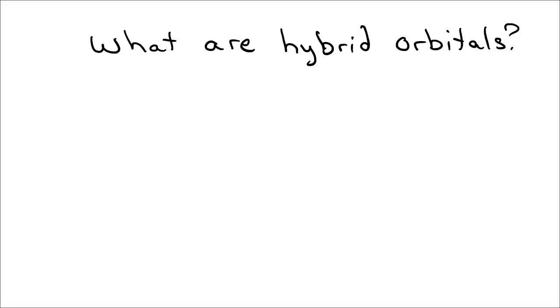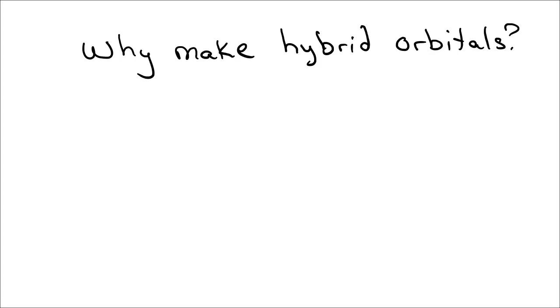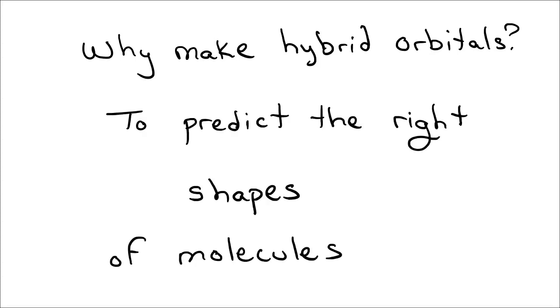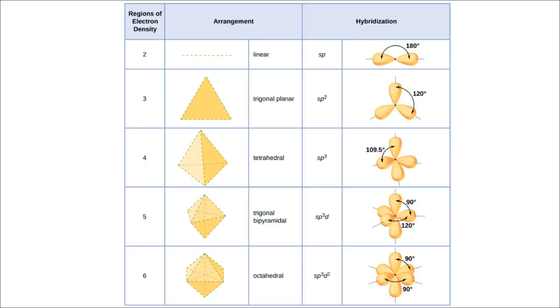So what are hybrid orbitals? They're orbitals made by mixing other orbitals together. And why would you do such a thing? Why would you make hybrid orbitals? To predict the right shapes of molecules. So you can see that hybrid orbitals are very closely connected with shapes. And so there are tables that connect the two, that connect shapes on the left hand here, with the types of mixed orbitals, or hybrid orbitals, that give them. And so that's where these tables come from that we use to solve problems.